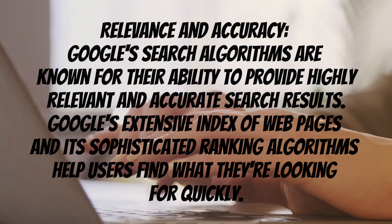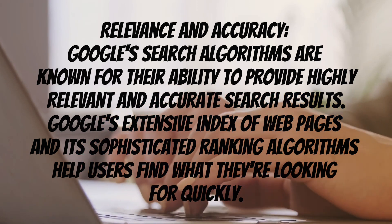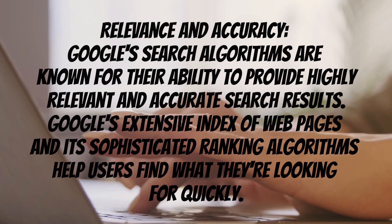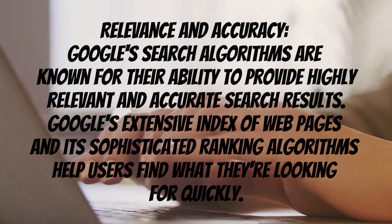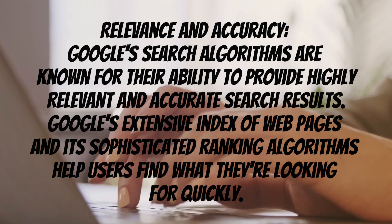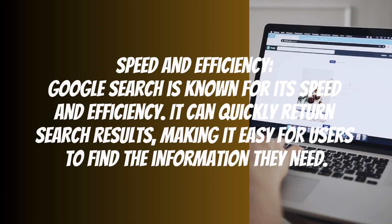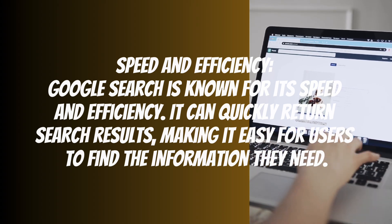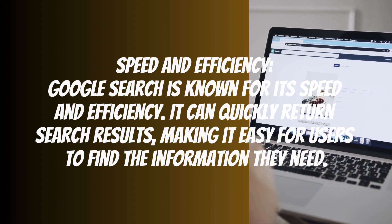Relevance and Accuracy: Google Search algorithms are known for their ability to provide highly relevant and accurate search results. Google's extensive index of web pages and sophisticated ranking algorithms help users find what they are looking for quickly. Speed and Efficiency: Google Search is known for its speed and efficiency — it can quickly return search results, making it easy for users to find the information they need.